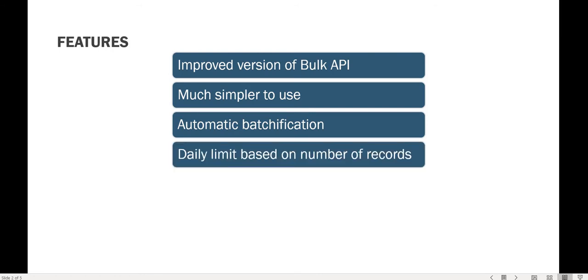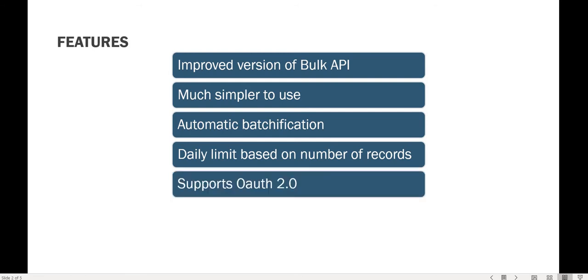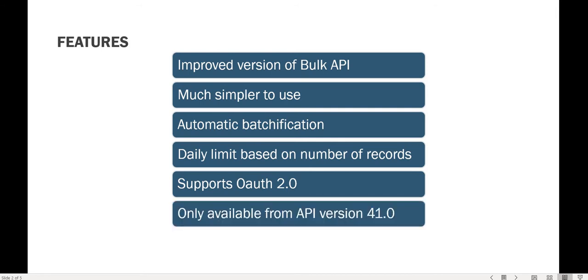Now Salesforce has taken the responsibility on themselves — you only need to submit the data and Salesforce will perform the batchification behind the scenes. The daily limit has been changed to be based on number of records rather than number of batches for rolling 24 hours. It now also supports OAuth 2.0 which makes it more secure. The limitation is that Bulk API 2.0 only works from API version 41.0, so any connectors or integration interfaces using API version less than 41 will need to be upgraded before using Bulk API.